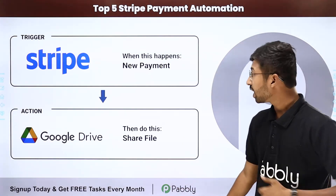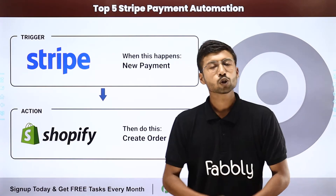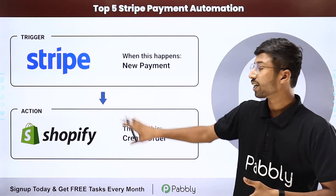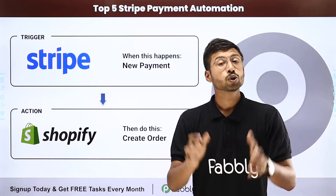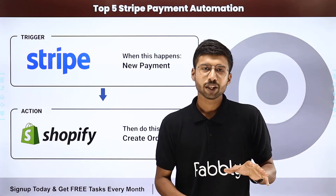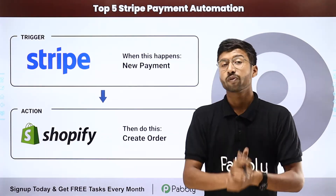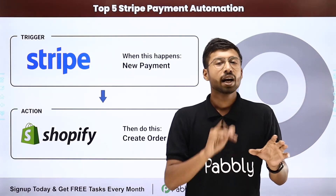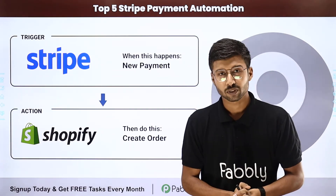Moving ahead to the second automation idea, and that is Stripe to Shopify. Suppose you are an e-commerce store owner and you have a store built using Shopify, and you are using Stripe to collect payments. Using this automation, whenever you receive a new payment on your Stripe payment page, automatically an order will be placed on your Shopify store. So you don't have to manually track payments or create new orders in Shopify.